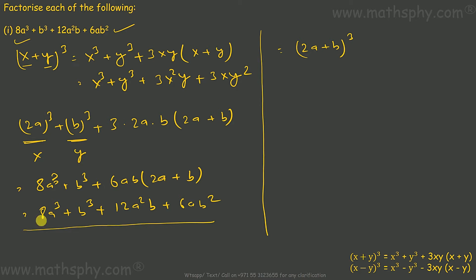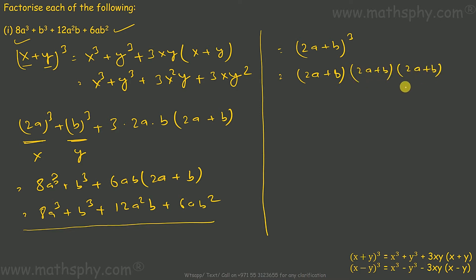That gives me this, or I write it as 2a plus b, three times: 2a plus b, 2a plus b, 2a plus b. In place of the cube I have written it three times.